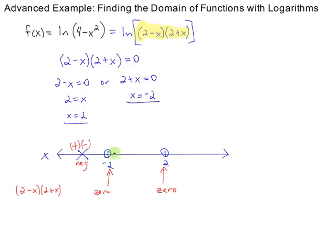If I choose a number between negative 2 and positive 2 for x, say 0, 2 minus 0 is positive. 2 plus 0 is also positive. And a positive times a positive is a positive. Now, we know that we can take the log of a positive number. So, every number in this region, since you'll always get a positive, every number in this region is in the domain. Remember, these are x values. So, this is literally our domain.